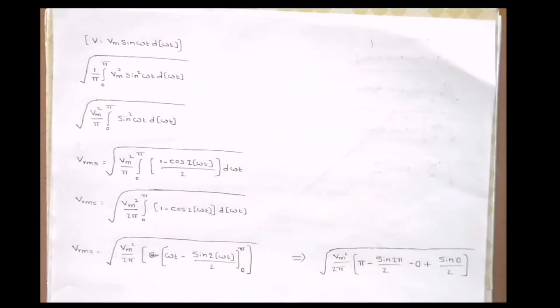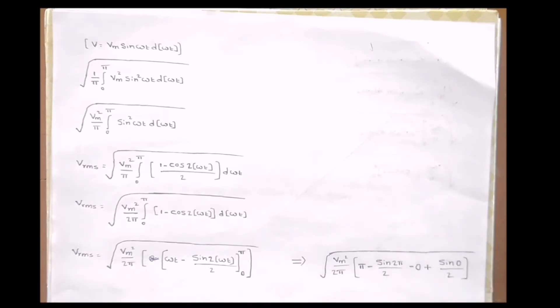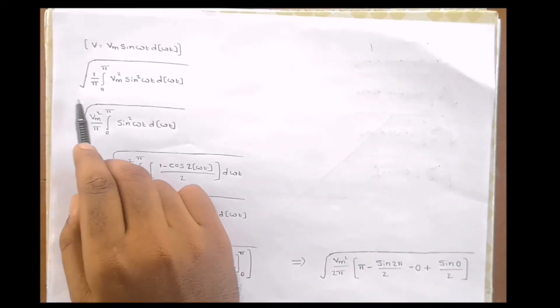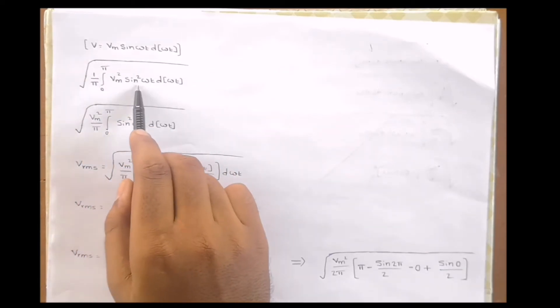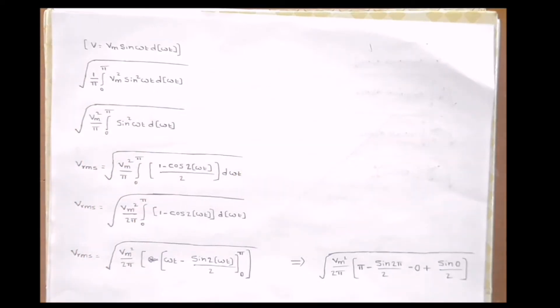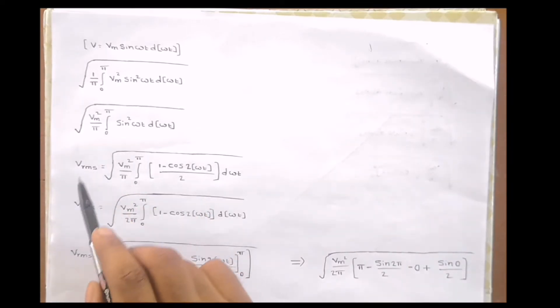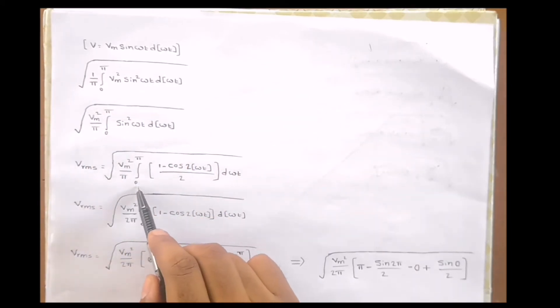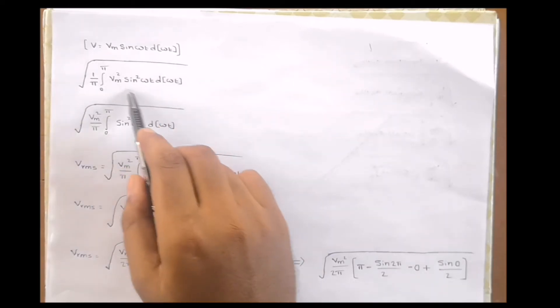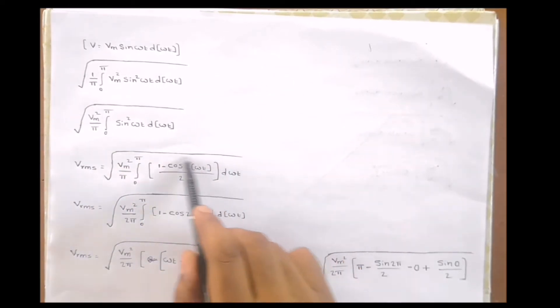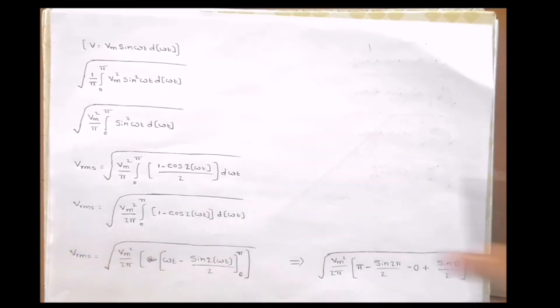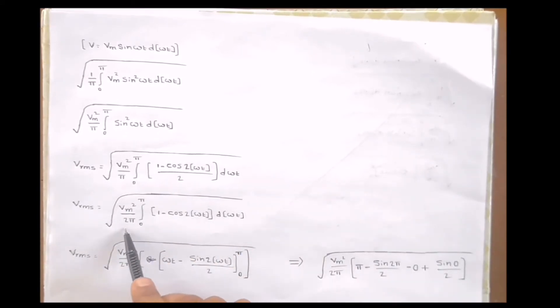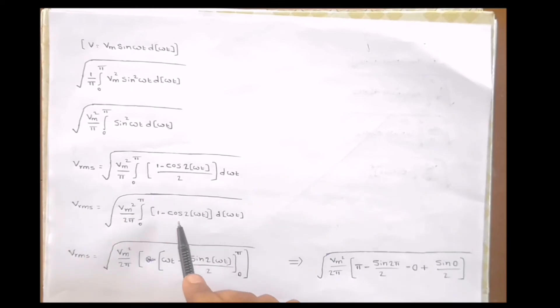Substituting V = Vm sin(ωt), we get Vrms = √((1/π) × ∫₀^π Vm² sin²(ωt) dωt). Taking Vm² outside gives √(Vm²/π × ∫₀^π sin²(ωt) dωt). Using the identity sin²(ωt) = (1 − cos(2ωt))/2 and taking the 2 outside the integral, we get Vrms = √((Vm²/2π) × ∫₀^π (1 − cos(2ωt)) dωt).